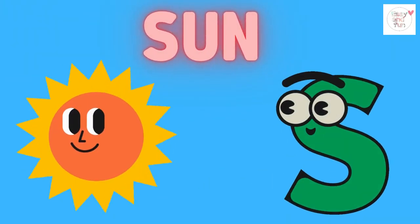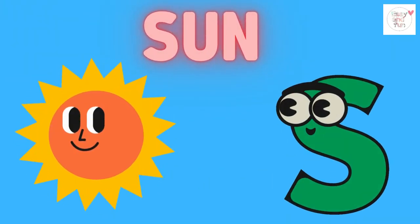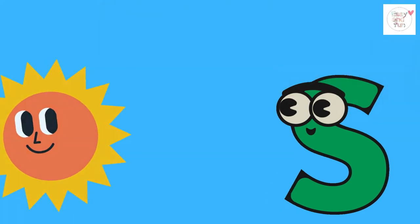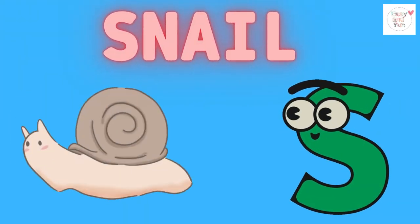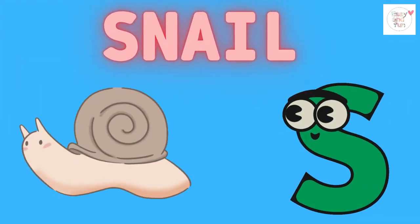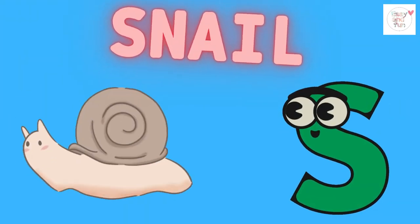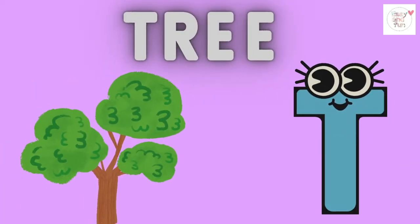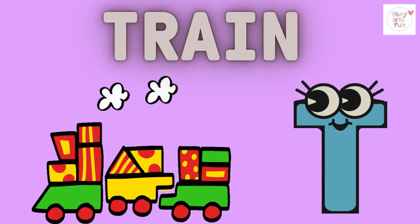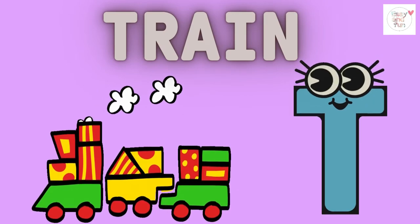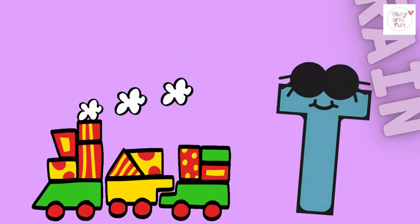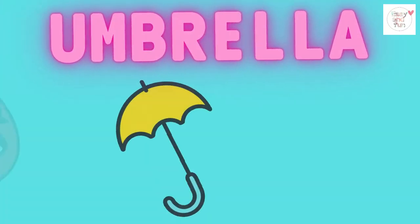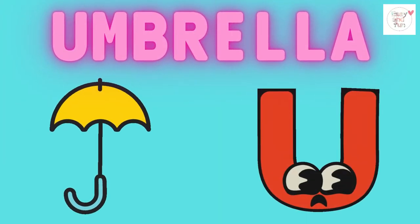S is for sun, s-s-sun. S is for snail, s-s-snail. T is for tree, t-t-tree. T is for train, t-t-train.